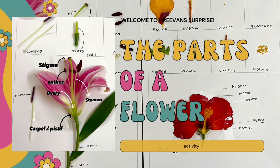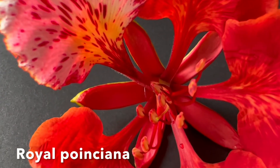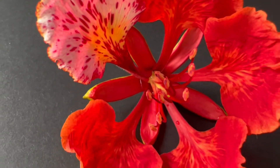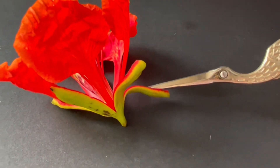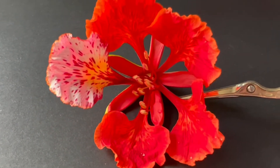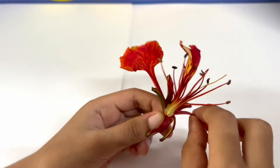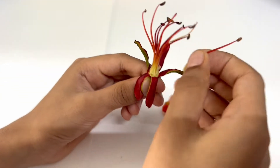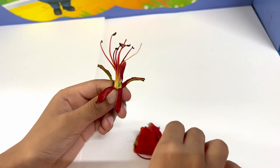Hello everyone, this is Revan, welcome back to my channel. Flowers play an important role in the ecosystem — flowers feed animals and humans by producing fruits. In this video I am going to talk about the parts of a flower and their functions. To do that, first I am going to dissect the flower. In this activity you will explore the parts of a flower by doing a dissection, or taking the flower apart, and figure out how the parts of a flower are involved in plant reproduction.